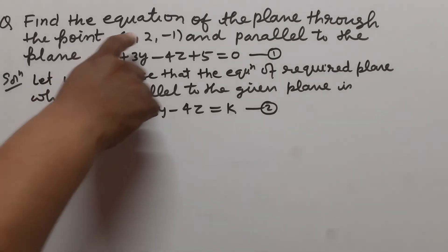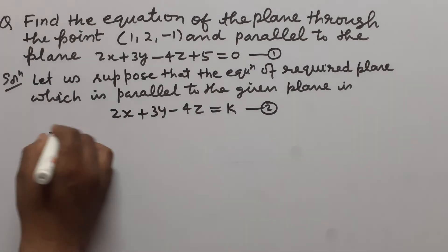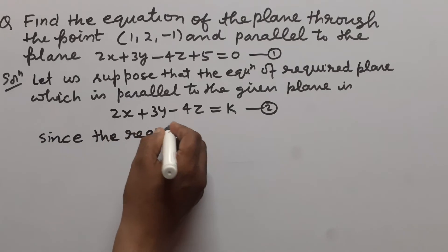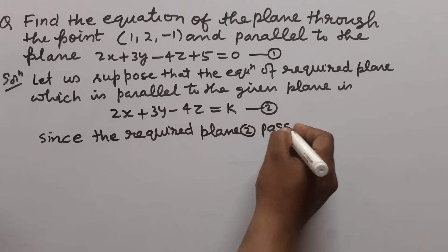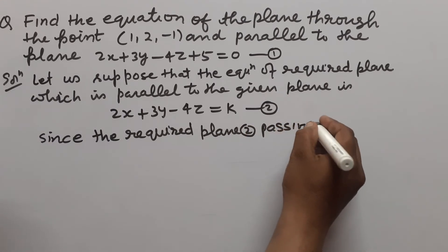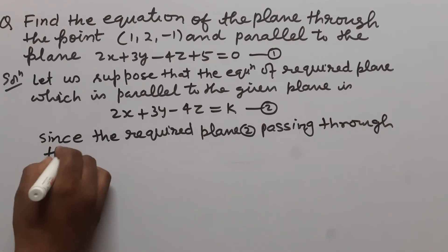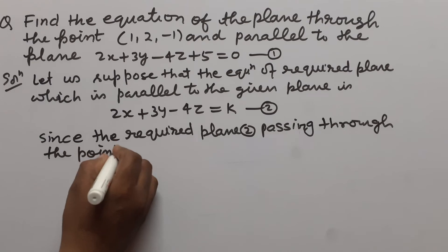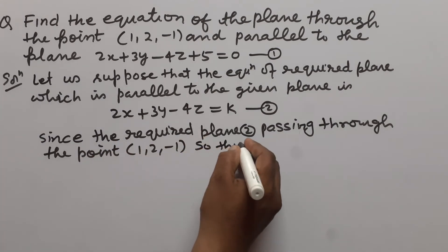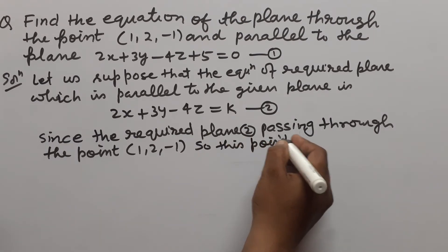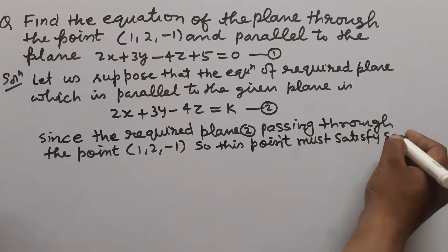Now, the required plane is passing through the point (1, 2, -1). Since the required plane 2 is passing through the point (1, 2, -1), this point must satisfy equation 2.